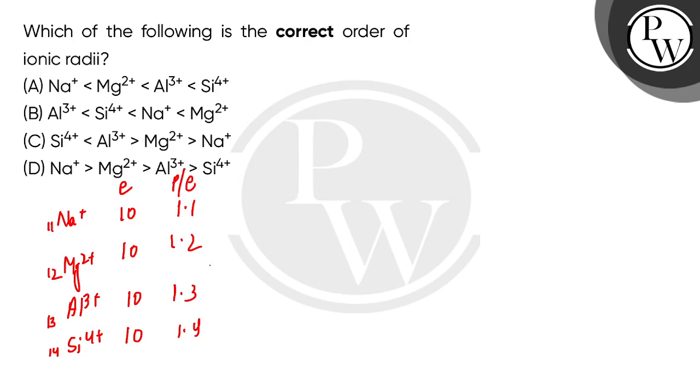p by e ratio which is the most important for silicon. So if you hold one electron, for one electron you have more protons available, so silicon 4 positive size is the smallest.